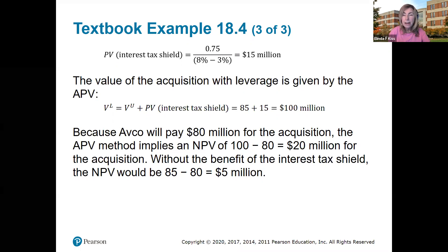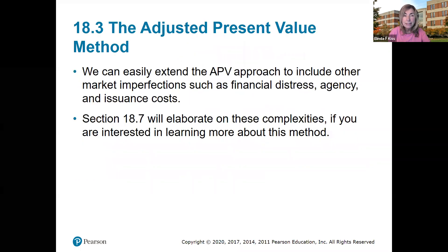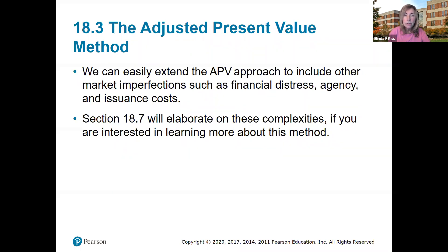Without the benefit of the interest tax shield, the NPV would be only $5 million. We can easily extend the method to include other market imperfections — if you're interested, look at section 18.7 in the textbook. So now you have seen the APV method, which you can use for valuing an acquisition or a project.